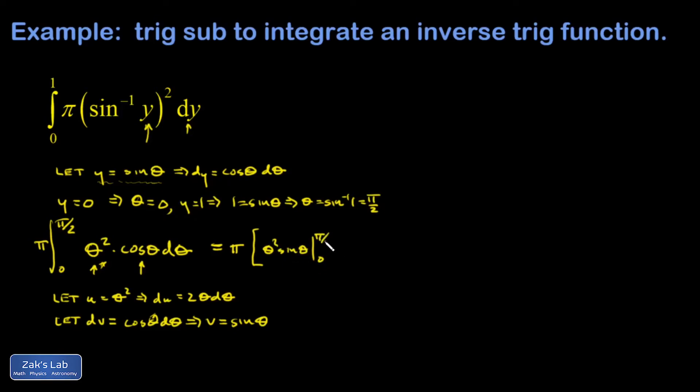Then I end up with u times v, so that's theta squared sine theta evaluated from zero to pi over two, minus the integral of v du. That's sine theta times two theta d theta. I'll move the two out in front, so I end up with the integral of theta sine theta d theta from zero to pi over two.